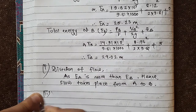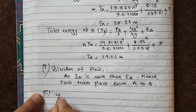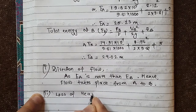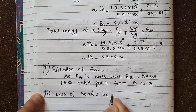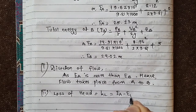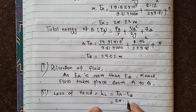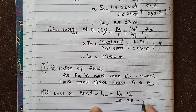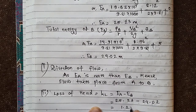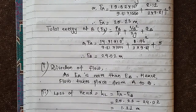Now find the loss of head. Loss of head h_L = E_A - E_B = 25.23 - 24.02 = 1.21 meters.